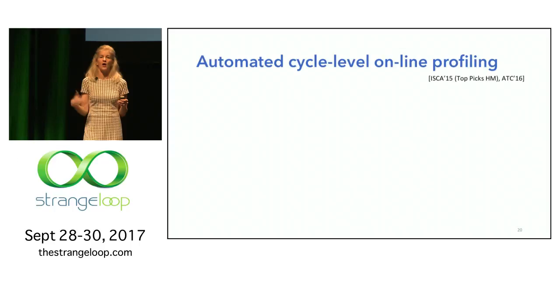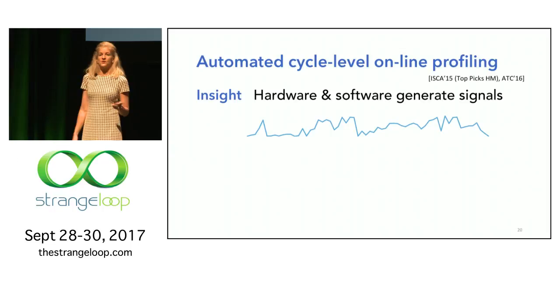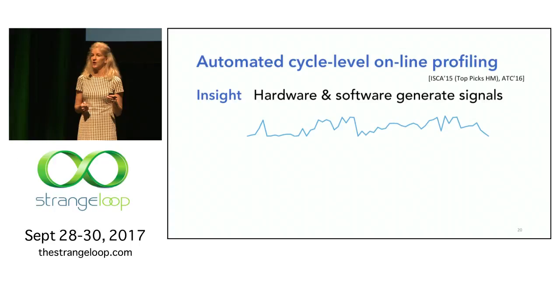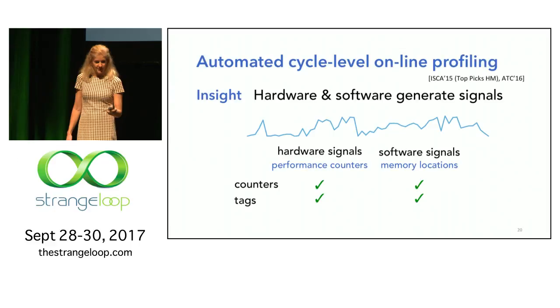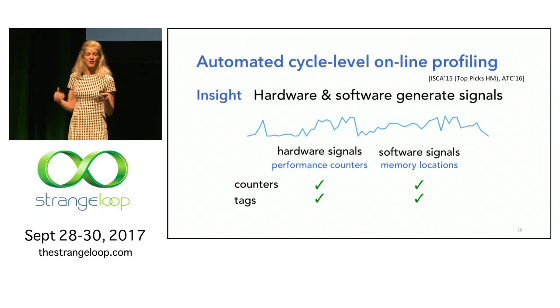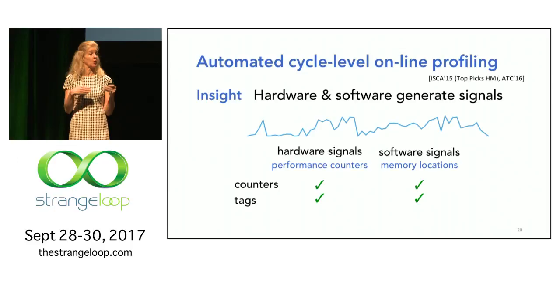This work is how we do cycle-level online profiling with minimum disturbance of the system. Our insight was that hardware is just generating signals — you can read out a hardware performance counter, or memory locations can communicate values or counters. All of these are things you can read from another thread without an interrupt. If you're running in the same thread in a shared process, you can just read those out of shared memory locations.